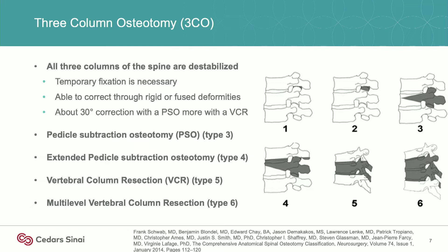A three-column osteotomy is oftentimes needed in certain cases. This is a complete destabilizing procedure of all three columns. You need temporary fixation because the benefit is that you're going to be able to correct through extremely rigid or completely fused deformities. In general, a PSO will get you about 30 degrees of correction in most cases, and with a VCR you can get even more, depending on the situation.